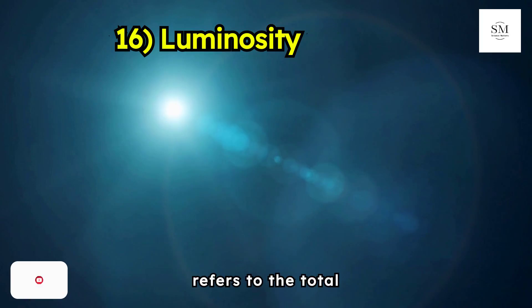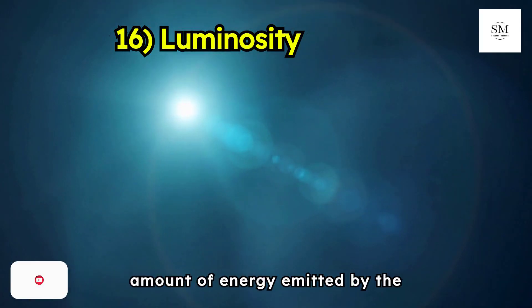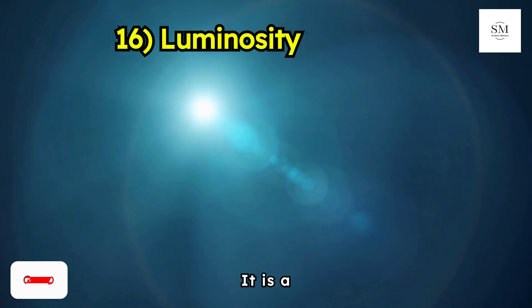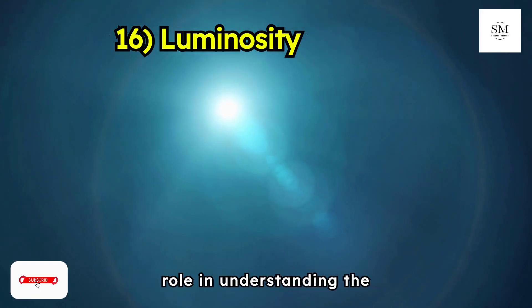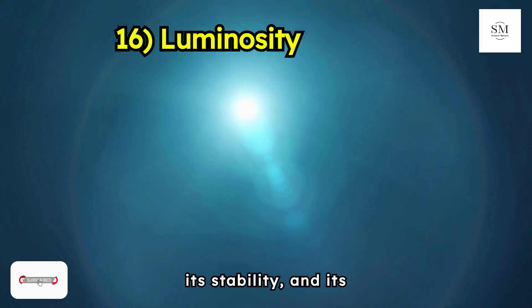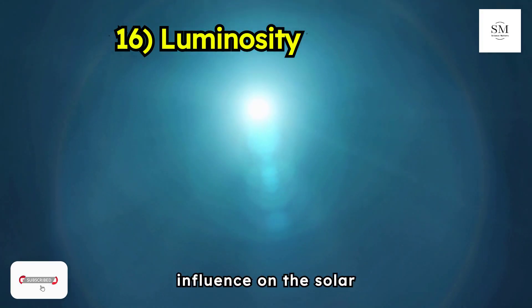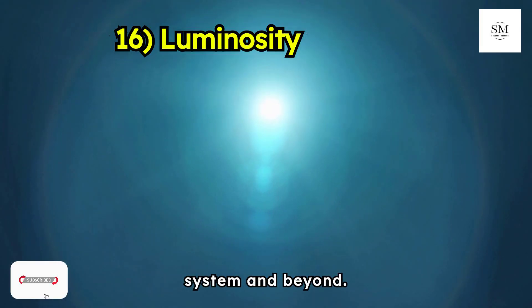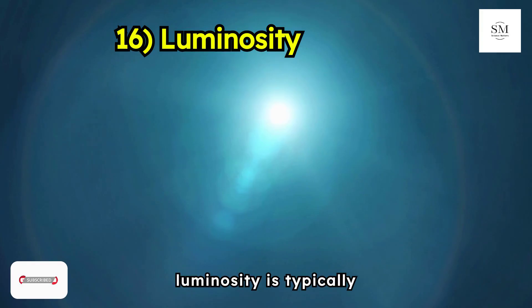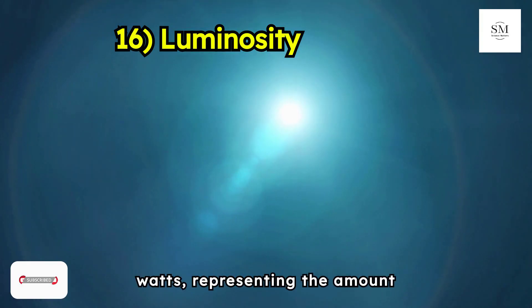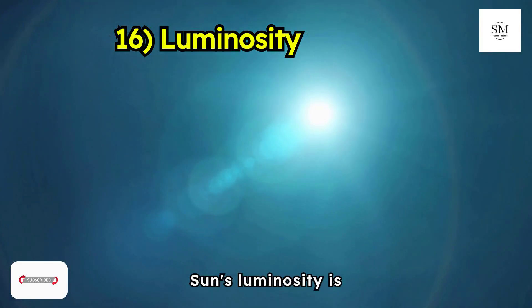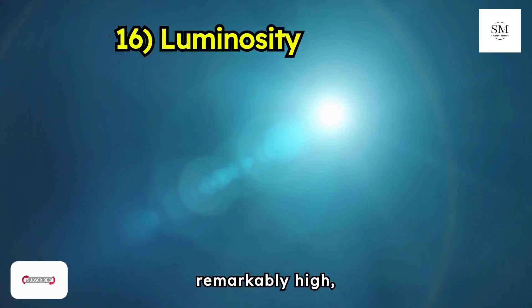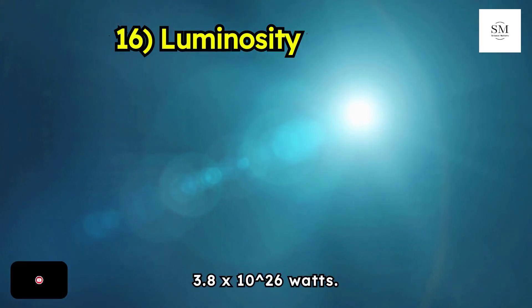Solar luminosity refers to the total amount of energy emitted by the Sun per unit time. It is a fundamental measure in astrophysics and plays a central role in understanding the Sun's energy output, its stability, and its influence on the solar system and beyond. Solar luminosity is typically expressed in watts, and the Sun's luminosity is approximately 3.8×10^26 watts.